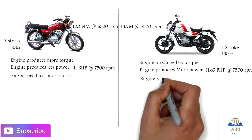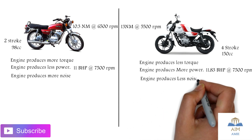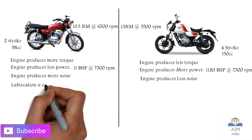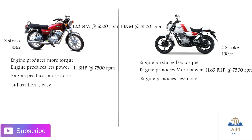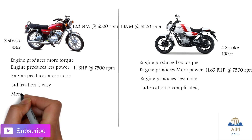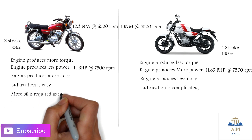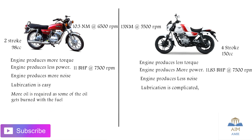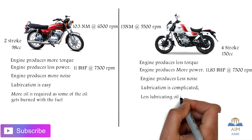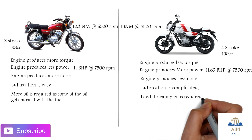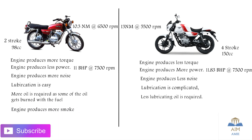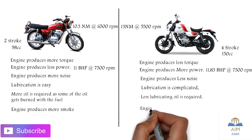The two-stroke engine produces more noise, whereas the four-stroke engine produces less noise. Lubrication is easy in the two-stroke engine, but in the four-stroke engine, the lubrication system is more complicated and costs more. In the two-stroke engine, more oil is required as some oil gets burned along with the fuel in the combustion chamber. In the four-stroke engine, less lubricating oil is required as there is a separate lubrication system.